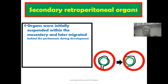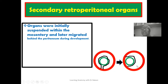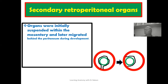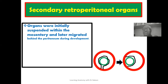This retroperitoneal state occurs at the later stage. Initially during embryogenesis, the organ is suspended within the peritoneum, then as development proceeds, there is a translocation where it is pushed to the side of the body wall and the peritoneum follows. For secondary retroperitoneal organs, the transformation is from an intraperitoneal presentation during embryogenesis to a retroperitoneal presentation — this is called a secondary retroperitoneal presentation.